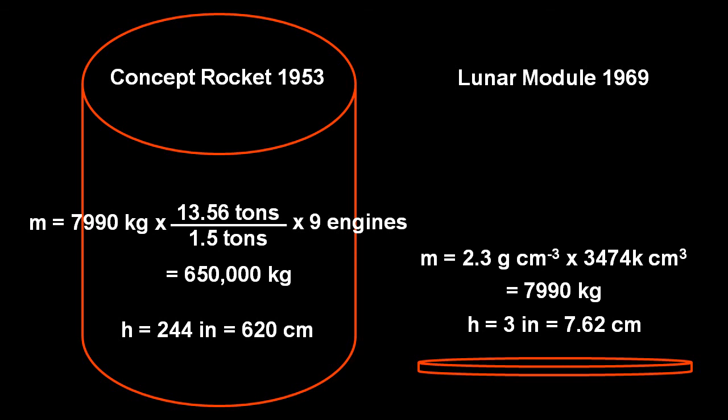And simply extending calculations on the amount of regolith displaced by the lunar module to Von Braun's 1953 concept rocket shows that it would have dug a crater 81 times bigger, deeper, wider, whatever, than the lunar module.